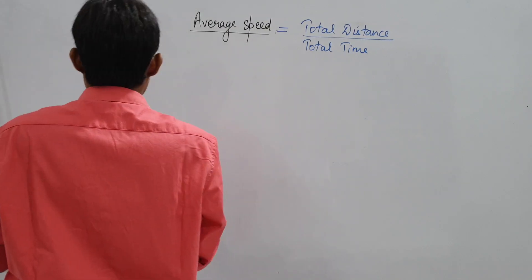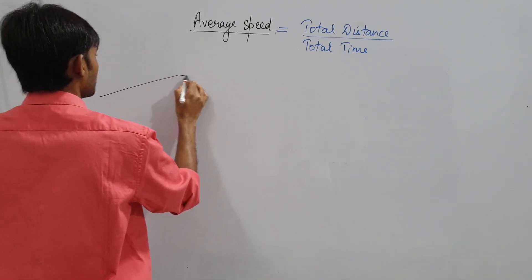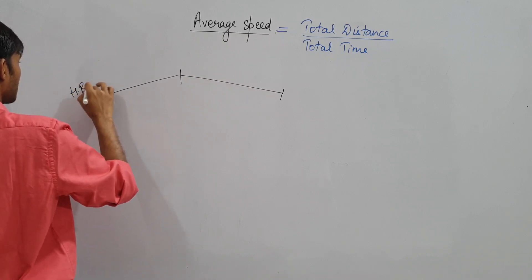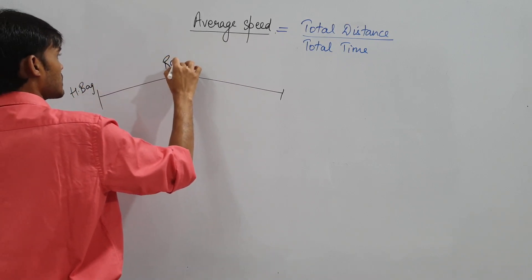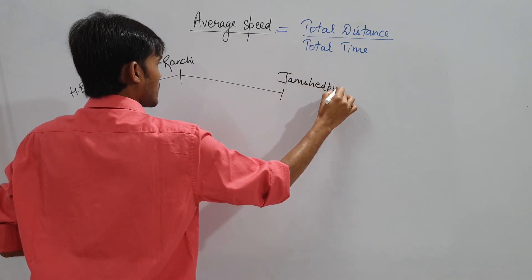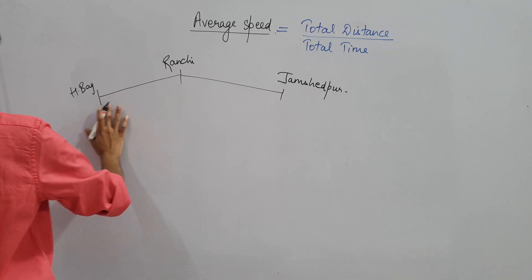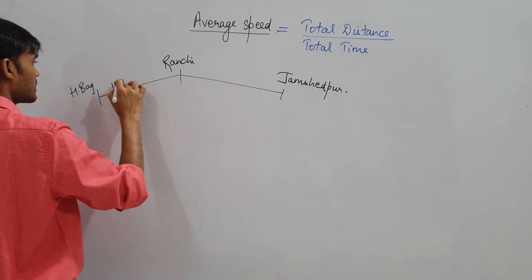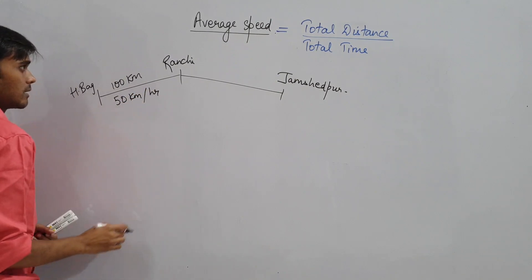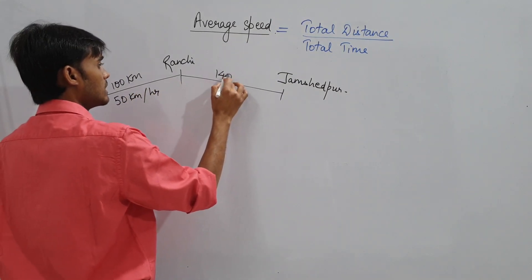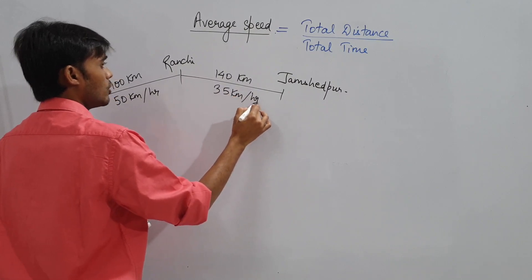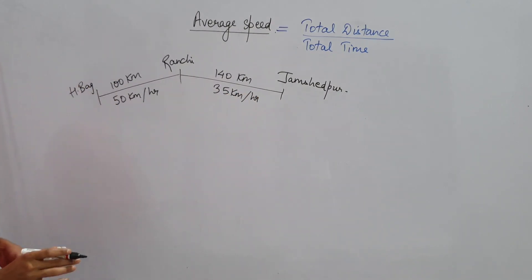Moving further to the second format — this is Hazaribagh, this is Ranchi, and this is Jamshedpur. This time the question says: Hazaribagh to Ranchi is 100 km traveled at 50 km per hour, and Ranchi to Jamshedpur is 140 km traveled at 35 km per hour. Find average speed.